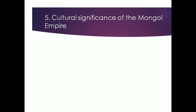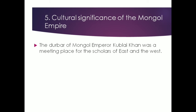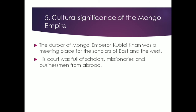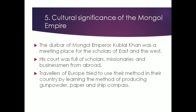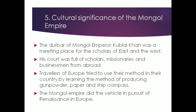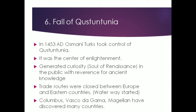The fifth cause is the cultural significance of the Mongol Empire. The court of Mongol Emperor Kublai Khan was a meeting place for scholars of the East and the West. His court was full of scholars, missionaries, and businessmen from abroad. Interpersonal interaction between these scholars helped in the progress of knowledge and science. European travelers also learned methods of producing gunpowder, paper, and the ship compass. Thus the Mongol Empire served as a vehicle in the pursuit of Renaissance in Europe.